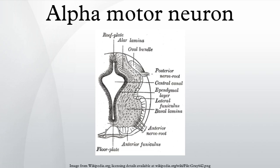Motor nuclei are found throughout the brainstem — medulla, pons, and midbrain — and for developmental reasons are found near the midline of the brainstem. Generally, motor nuclei found higher in the brainstem innervate muscles that are higher on the face. For example, the ocular motor nucleus contains alpha motor neurons that innervate muscles of the eye, and is found in the midbrain, the most rostral brainstem component.